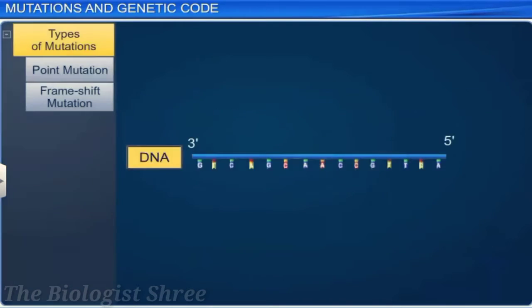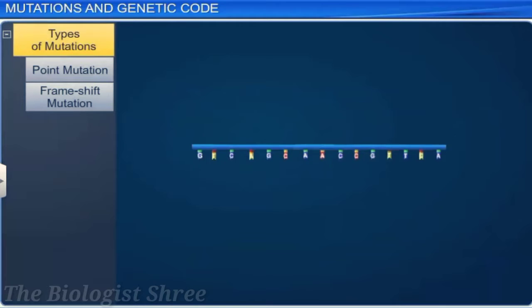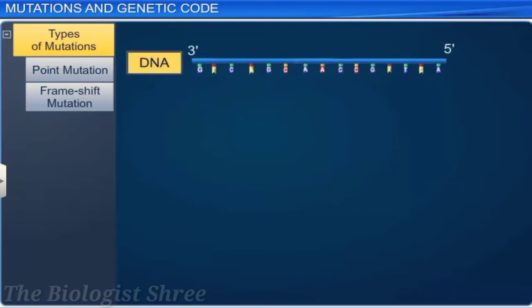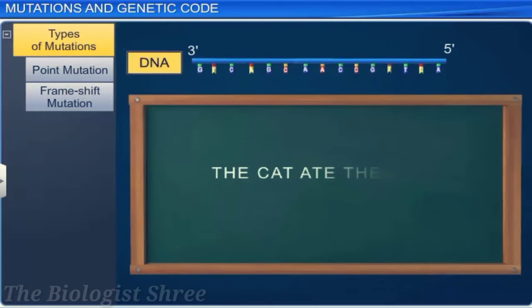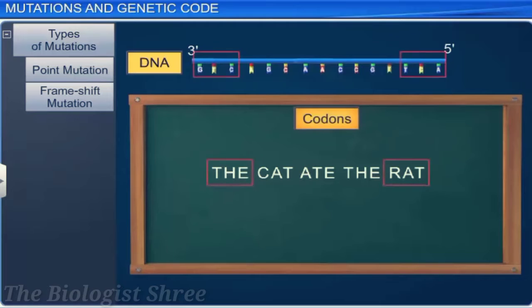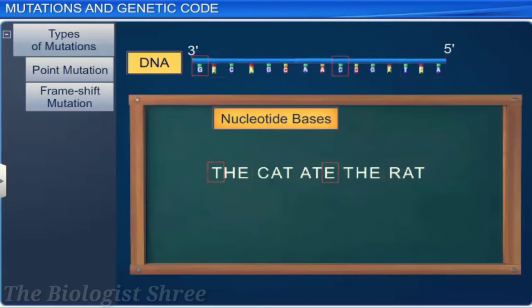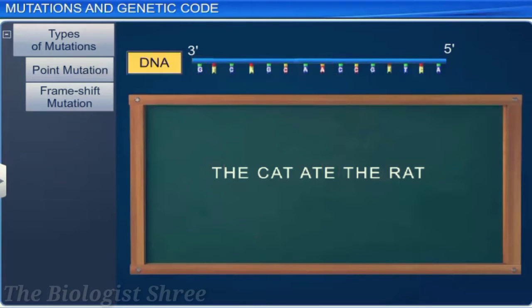To understand these two types of mutations, let us use the statement 'the cat ate the rat' to represent a DNA template. The individual words of the statement represent triplet DNA codons, and the letters represent nucleotide bases. Moreover, just like a DNA template, the statement is a reading frame where the words are contiguous and non-overlapping.